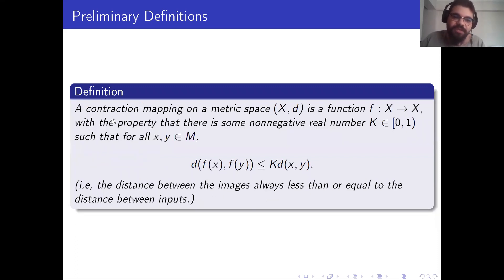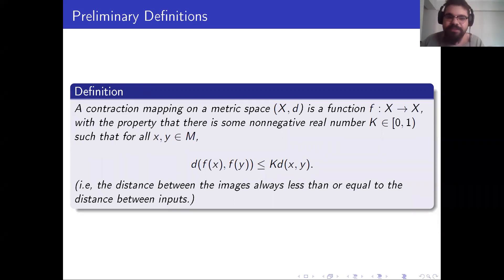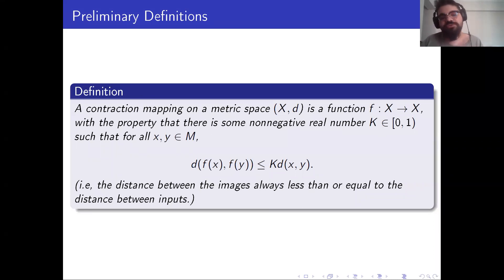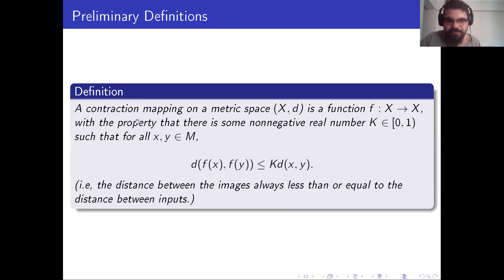This polynomial has only one fixed point, which is two — meaning f(2) = 2. Now I will talk about contraction mappings. We take a function defined on a metric space (X, d). If the distance between the images is always less than or equal to a constant times the distance between inputs, we call this function a contraction mapping.